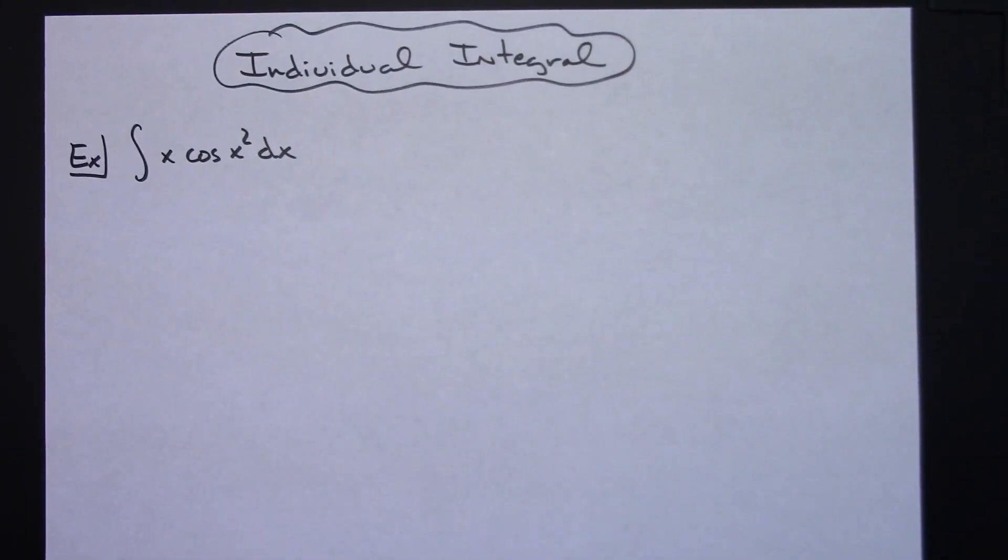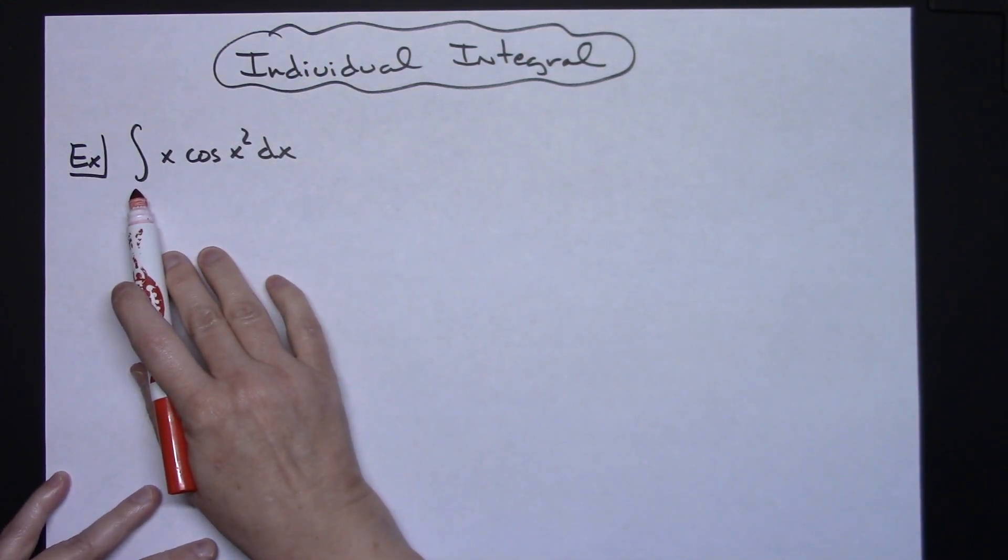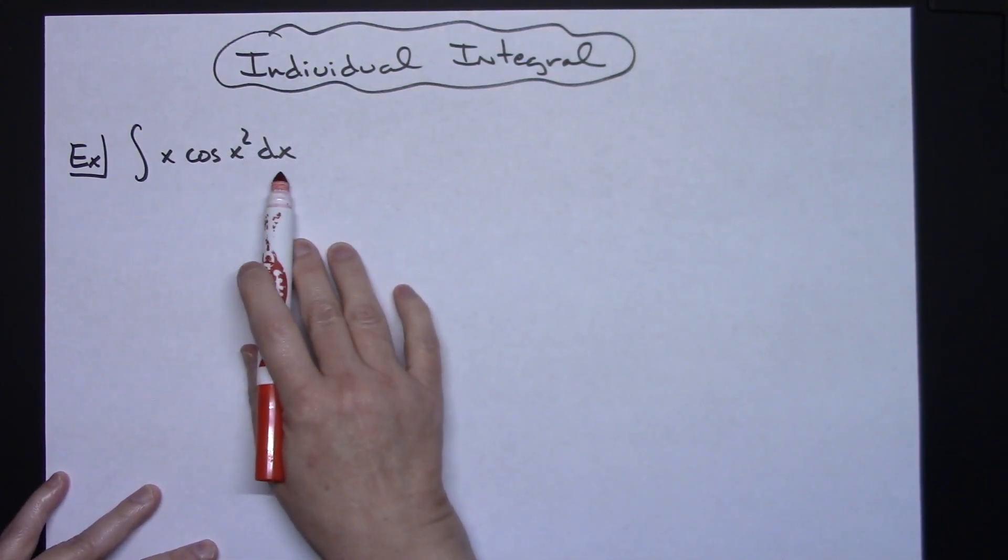In this video I'm going to work out a basic individual integral. It's going to be a basic u-substitution integral for that beginning Calc 1 student who is just starting u-substitution. We're going to take a look at the integral of x cosine x squared dx.